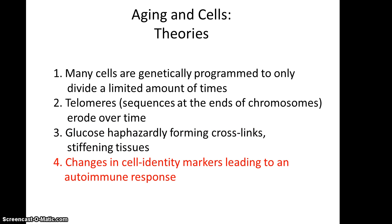Finally, there's the idea that mutations accumulating in cells can lead to cells expressing identity markers not recognized as self by the immune system, or lead to an immune system recognizing cell identity markers that aren't actually present in the person. These can lead to autoimmune responses and the body breaking down its own tissues. Any one of these theories could potentially be true, or a combination thereof, as to what leads to aging at the cellular level. I hope you enjoyed the final portion of the Chapter 2 lectures.